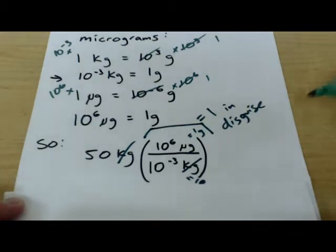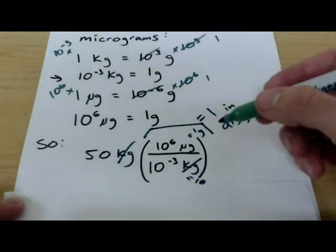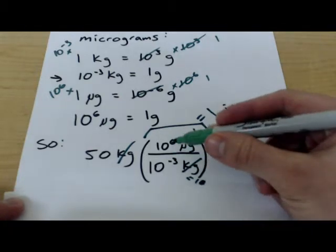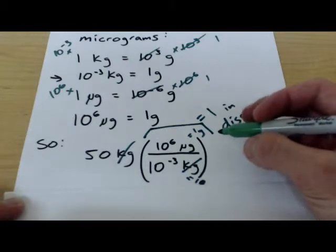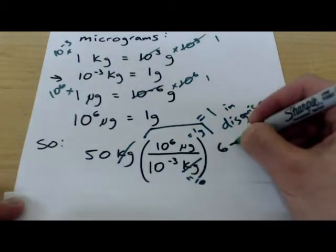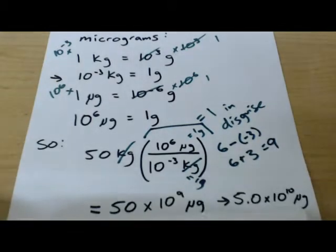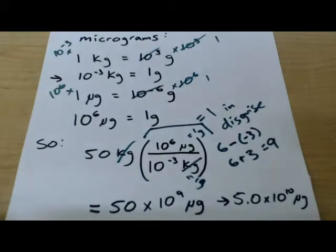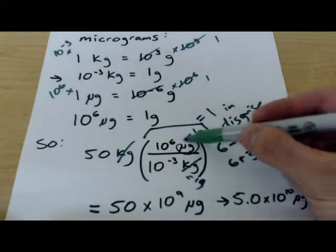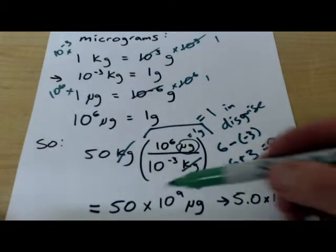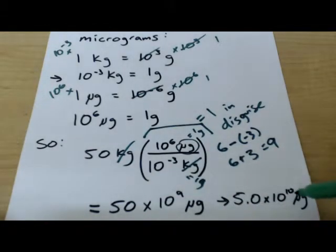And the units we're left with is micrograms. Again, dividing same base exponents, we're going to subtract. So we're going to go six minus negative three, or six plus three is nine. So our answer is fifty times ten to the nine micrograms. Or, to express that in proper scientific notation, five point zero times ten to the ten micrograms. So I move the decimal place over one and I added another power of ten to our scientific notation.